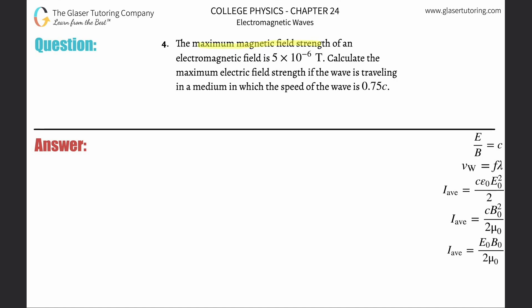Number four. The maximum magnetic field strength of an electromagnetic field is five times ten to the minus six tesla. Calculate the maximum electric field strength if the wave is traveling in a medium in which the speed of the wave is 0.75c.